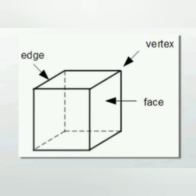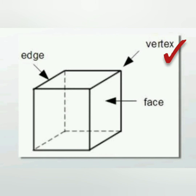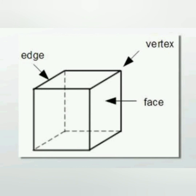Here you can see a cube. The first term is 'face' — face means chehra (surface). This cubical box has a total of six faces: four on the surrounding sides, one on top, and one on the bottom. The next term is 'vertex' — vertex means corner, where three lines meet. The plural form of vertex is 'vertices'. Another term is 'edge' — edge means kinaara or border. The lines forming the borders of this cube are called edges.